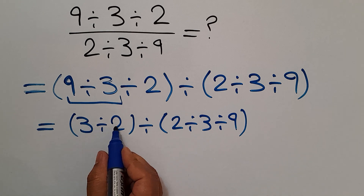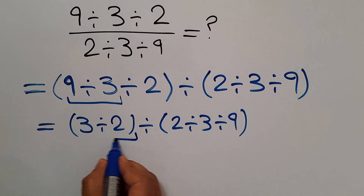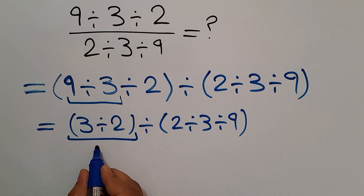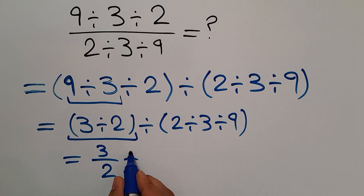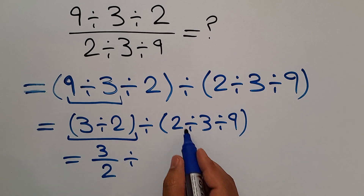3 divided by 2 can be written as 3 over 2. So we have 3 over 2 divided by the second parentheses.